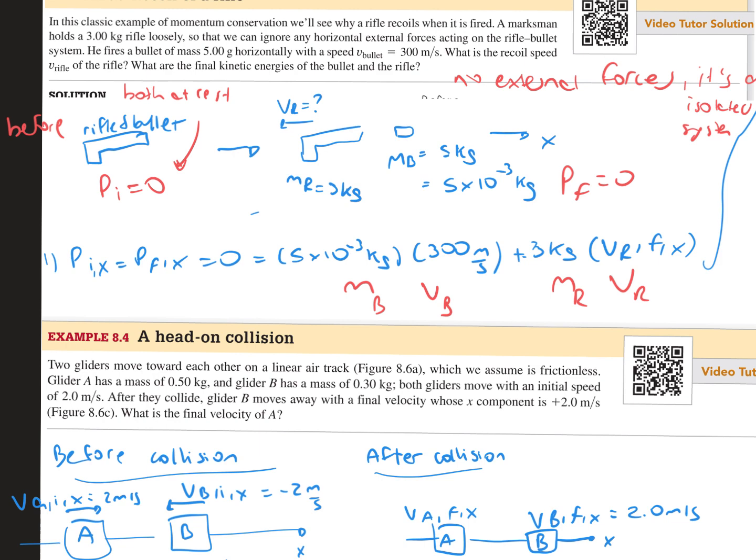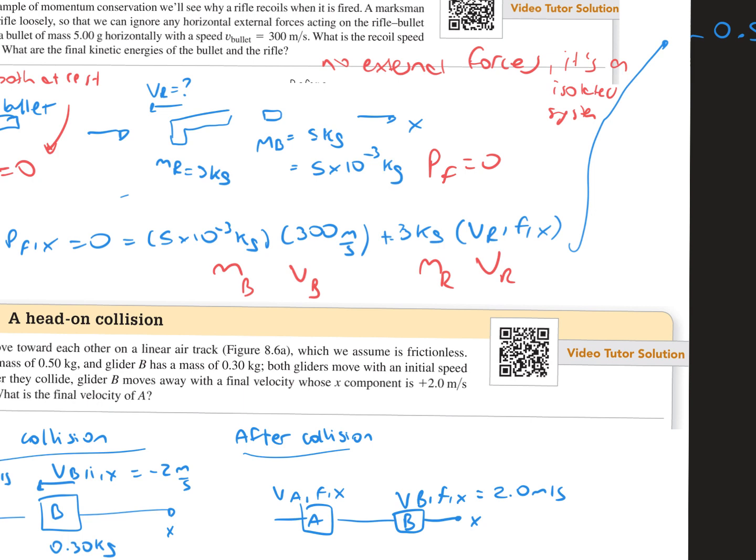As we continue with this problem, we have 5 times 10 to the negative third kilograms. Because this part right here should be grams, the mass of the bullet is in grams, and as we convert it into kilograms, it's going to be 5 times 10 to the negative third.